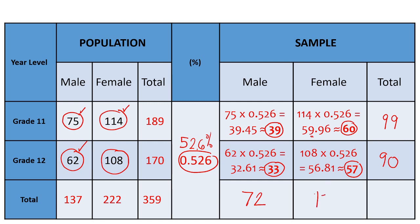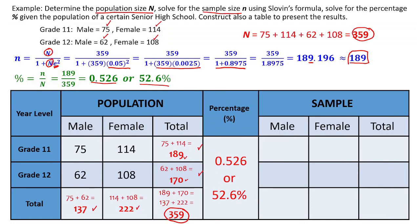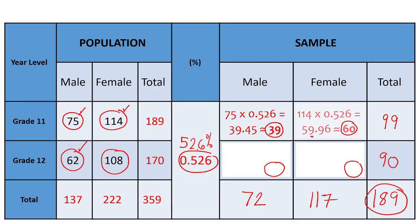Now let's verify. Can we add the totals 99 and 90, and also 72 and 117? How much do we get? 189. What is 189 in our computation? Is it the population, or is it the sample size? Look at our sample size — we were able to get 189. So in our sample size, it will also be 189.